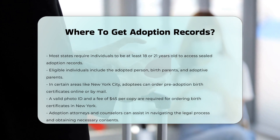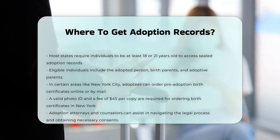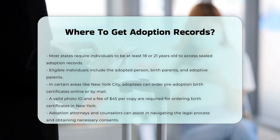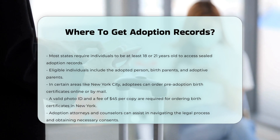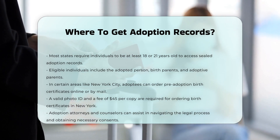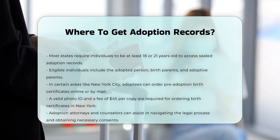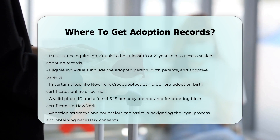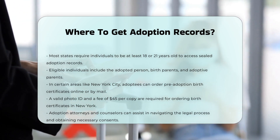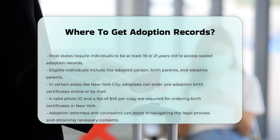For adoptees born in certain areas like New York City, you can order a pre-adoption birth certificate online or by mail. You will need to provide valid photo ID and pay the required fee, which is $45 per copy in New York.